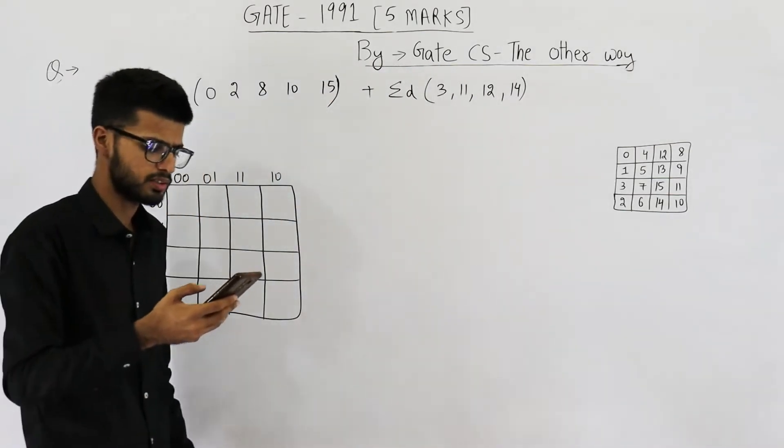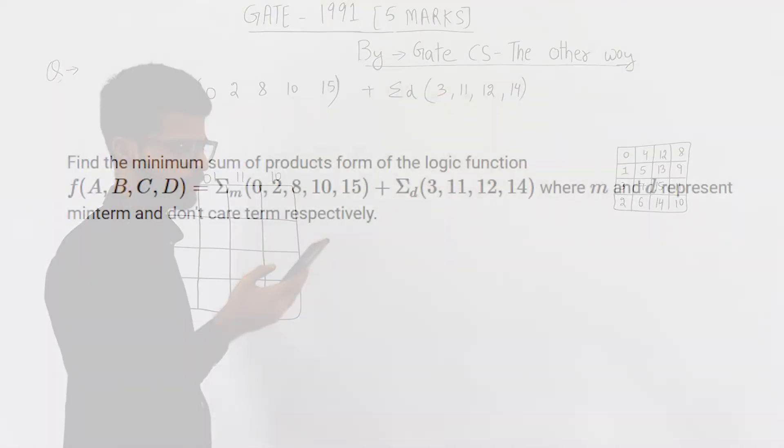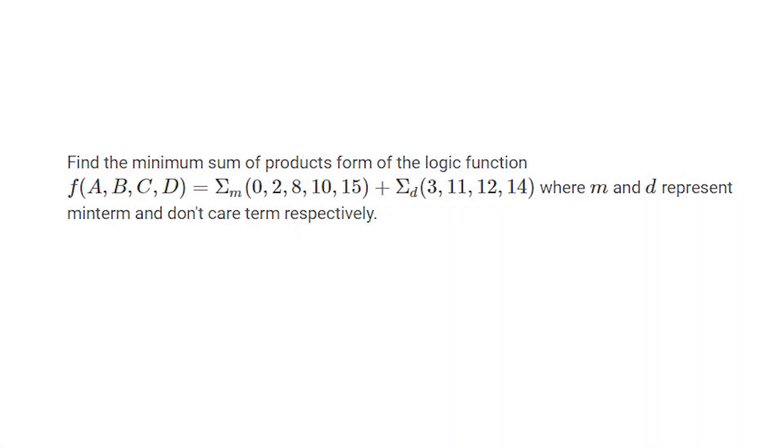Let me read out the statement once then we'll solve it. Find the minimum sum of products form for the logic function. Have a look at this function. They're saying m and d represent minterms and don't care terms respectively.